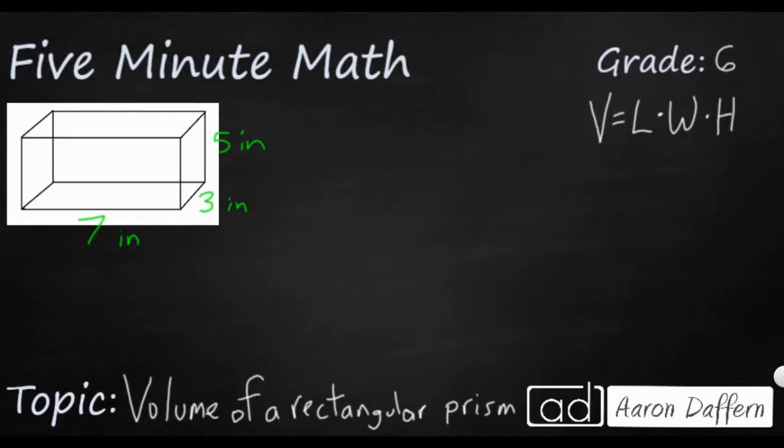So you see over here on the right, we have one of the formulas that we can use to find the volume of a rectangular prism. I say one because there's another way we can write this formula. We'll look at that in just a moment. But basically, you're going to take your length and your width and your height, and you're going to multiply those three. It doesn't matter in whatever order.